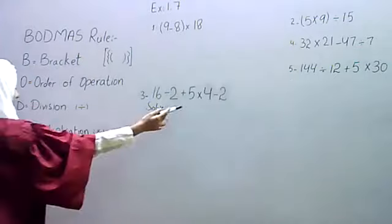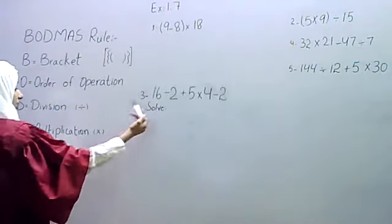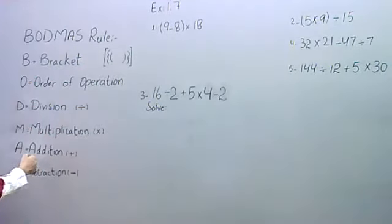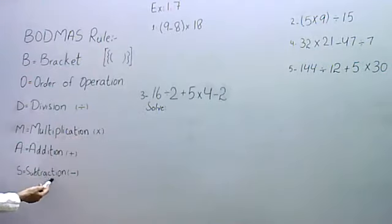Then multiplication, we have multiplication, addition, addition, A stands for addition. Add, add, and S stands for subtraction. Then subtraction, we have the BODMAS rule.